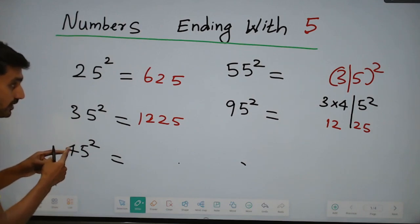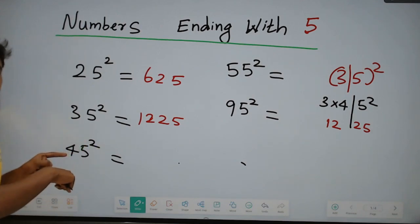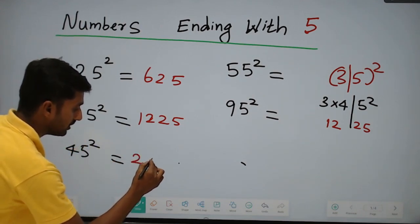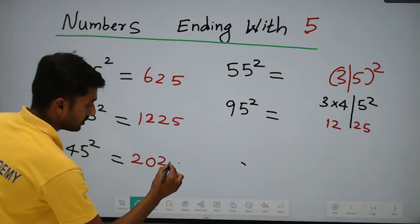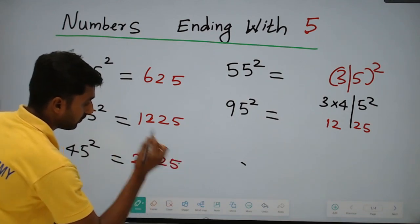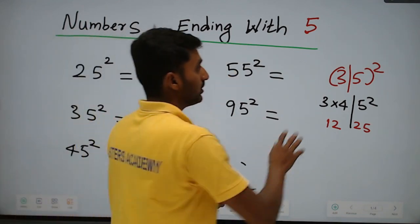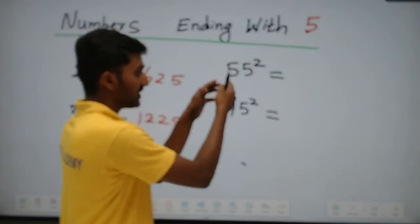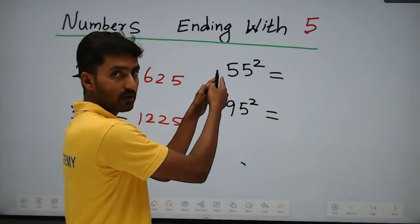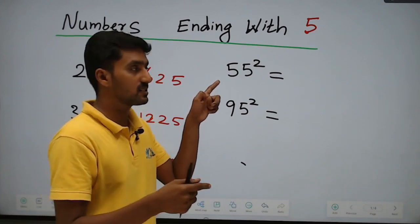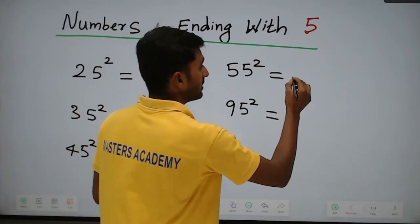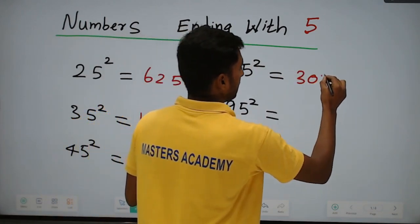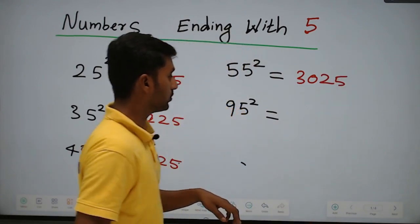For 45 squared: first digit is 4, next digit in table is 5 — so 4 into 5 equals 20. Append 25 — answer is 2025. For 55 squared: first digit is 5, next digit is 6 — so 5 into 6 equals 30. Append 25 — answer is 3025.